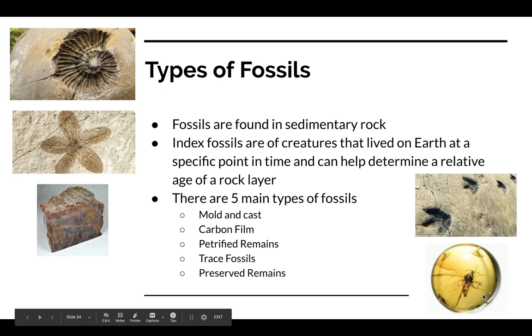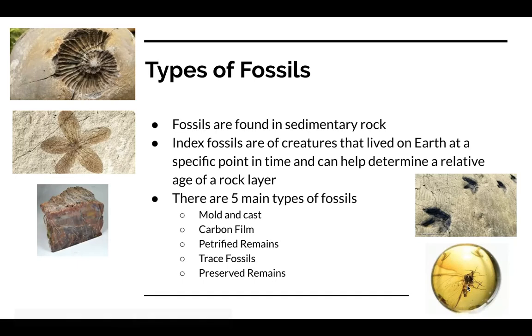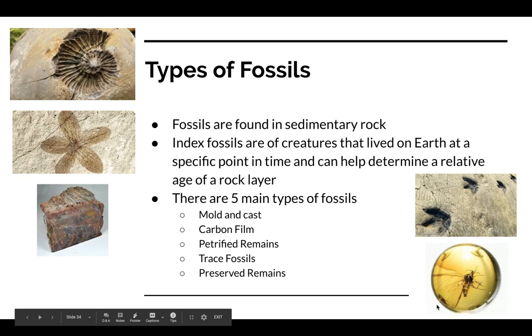Now, there is another type of preserved remain fossil that we have found. We have found preserved remains of, like, mammoths in ice. So ice has the same effect where it can preserve something back from the ice age. And some bogs, peat moss bogs, are so acidic that they can preserve remains, as well as tar pits can also preserve remains. So this is a pretty interesting area of study with fossils because it's really one of the best ways for us to see living material of things that have long since been gone.